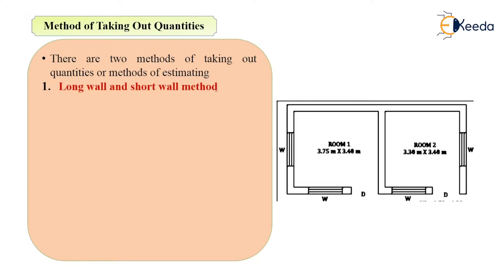The first method is the long wall and short wall method. As the name says, you have to divide the walls of a particular building according to its length. As you can see in the plan, if horizontal walls are considered as long walls, then it is necessary that vertical walls should be taken as short walls, and it is vice versa.